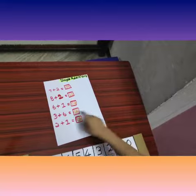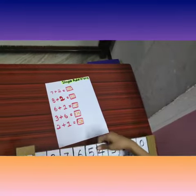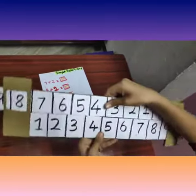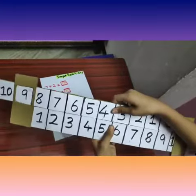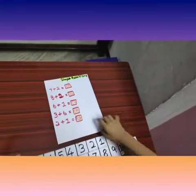Next equation: 3 plus 6. That is 3 and 6. We got 9. That is also correct.